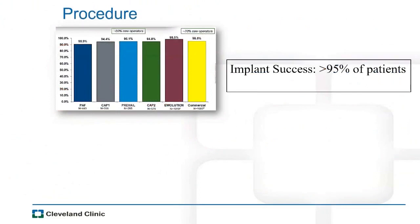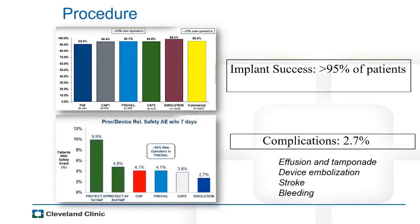All studies show implant success of more than 95%, and with the newer Watchman Flex, up to 99%. The safety profile — periprocedural complications such as pericardial effusion, perforation, device embolization, and stroke — has come down significantly from around 4% with earlier experience to 0.5% with the Watchman Flex, reflecting both improved operator experience and better device design.